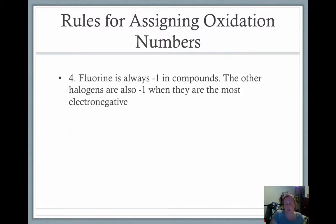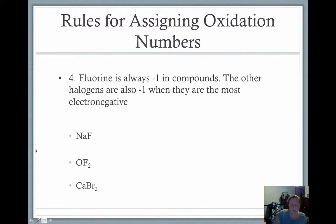Fluorine always has a minus one charge in compounds. The other halogens are also minus one, but only when they are most electronegative. So if fluorine is minus one, sodium is plus one — neutral. In OF₂, fluorine is minus one times two, making minus two overall, so oxygen becomes plus two when combined with fluorine. Bromine is minus one as a halide, so minus one times two is minus two, and calcium as a group two metal is plus two — again neutral.